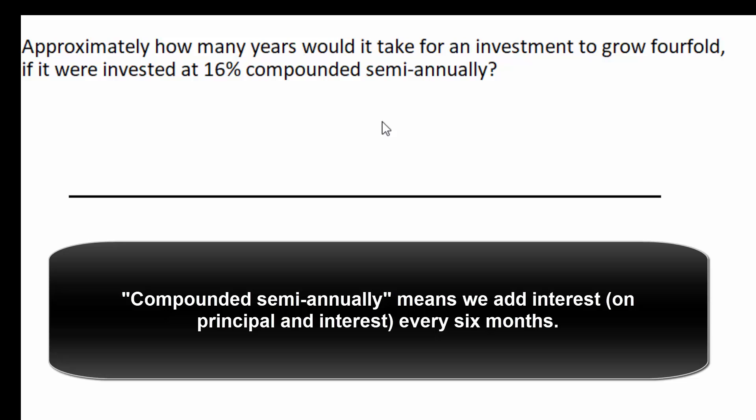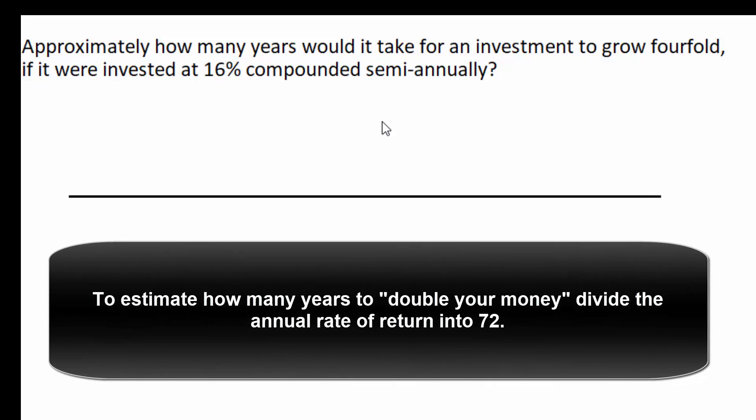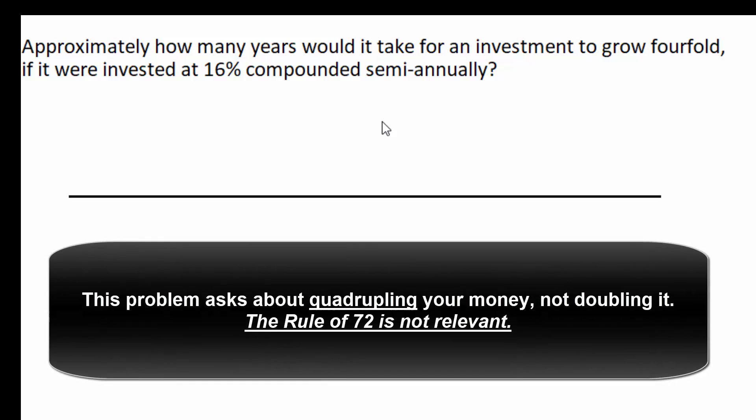Unfortunately the textbook talks about the rule of 72 in the chapter that precedes this homework and everyone thinks that somehow the rule of 72 plays into this. The rule of 72 is this kind of parlor trick that allows you to estimate how long it will take you to double your money. But this question doesn't ask about doubling your money, it asks about quadrupling your money.